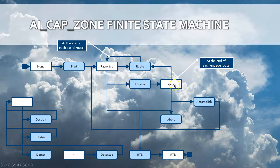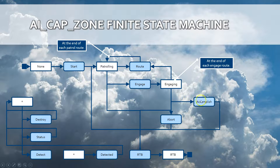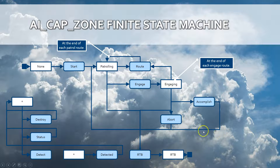The process while being engaged keeps being engaged until all of the units that were detected are destroyed by the AI. When all the enemies are being destroyed, the AI-CAP-ZONE will raise an event called accomplish and it will automatically transition back into the patrolling state, meaning the AI will fly back to the patrol zone.